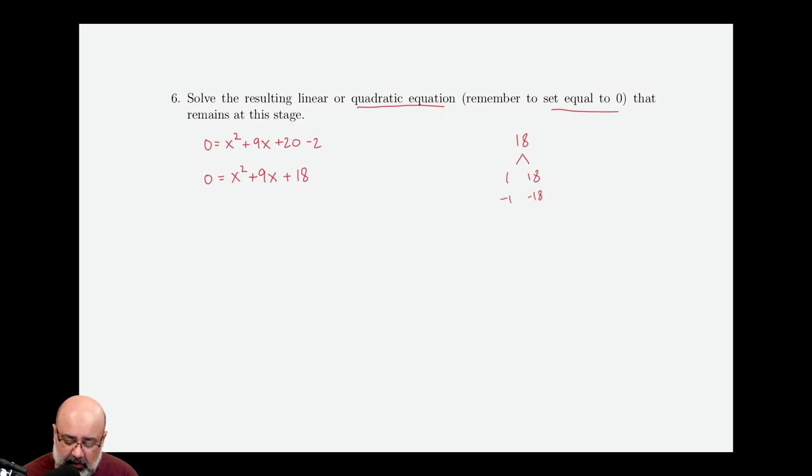1 and 18. Negative 1, negative 18. 2 and 9. Negative 2, negative 9. 3 and 6. Negative 3, negative 6. 4 doesn't work. 5 doesn't work. 6 is already in our list. So that's all the factors there are. And here we're looking for 3 and 6.